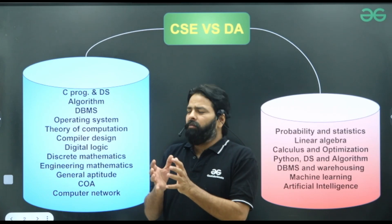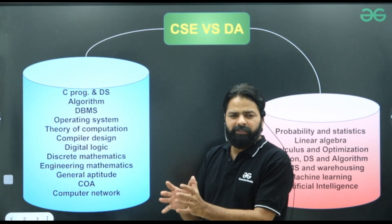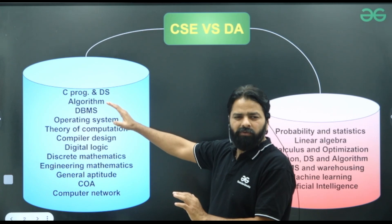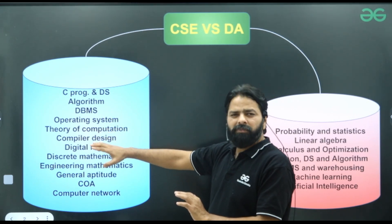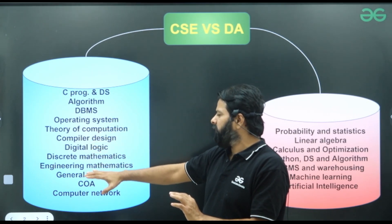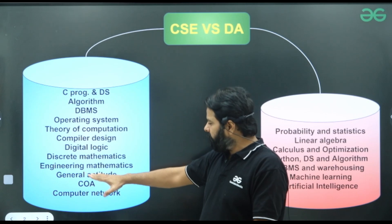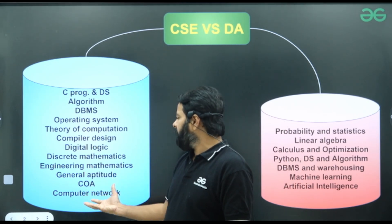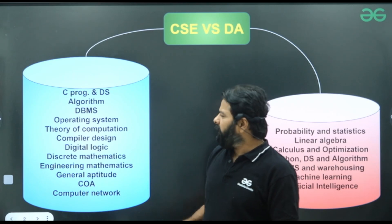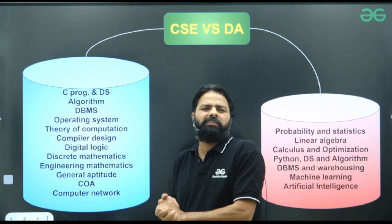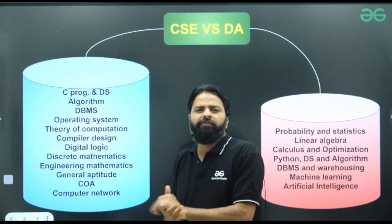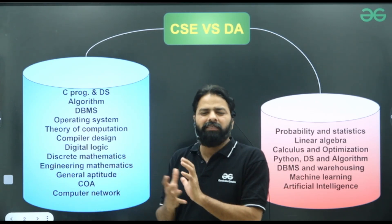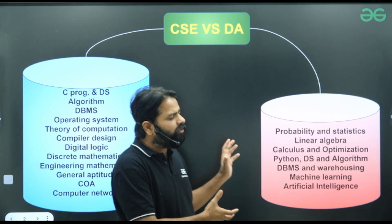CS basically has these subjects: C programming, data structures, algorithms, DBMS, operating system, TOC, compiler, digital logic, discrete mathematics, engineering mathematics, general aptitude, and computer organization, as well as computer networks. These are more or less related to system-related and core concepts of computer science, and these are going to help you for cracking the computer science exam.